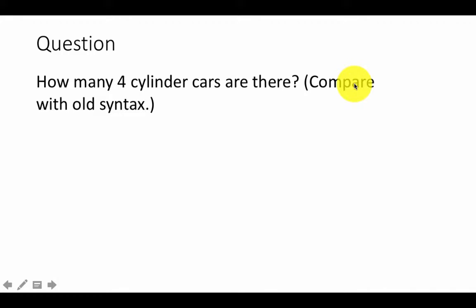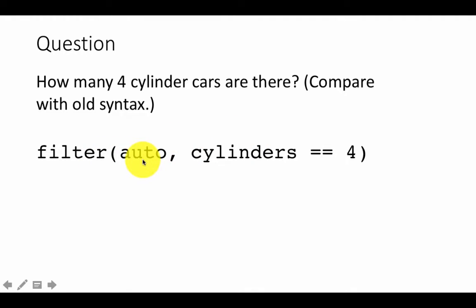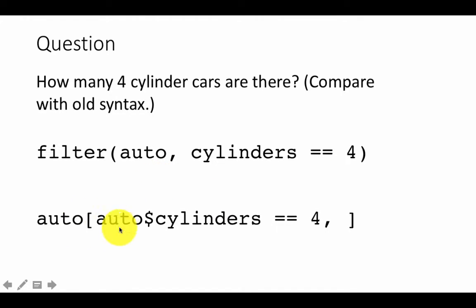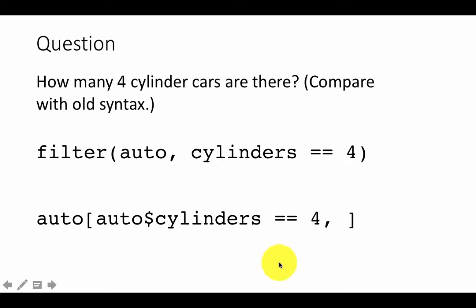The first question: how many four-cylinder cars are there overall? We can filter and simply say cylinders equals four: filter(auto, cylinders == 4). With the old base R syntax using square brackets you would write auto[auto$cylinders == 4, ] to get all columns. With dplyr filter you don't have to specify the dollar sign — the syntax is a little cleaner and easier to read.